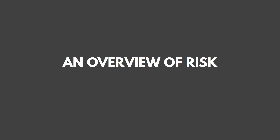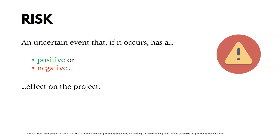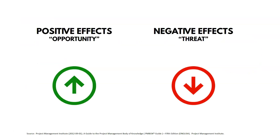A risk is an uncertain event that, if it occurs, has a positive or negative effect on the project. We often think about risk as being only negative, but there are positive risks too — like investing in a stock where it could go down or go up. Positive effects on risks we call opportunities, and negative effects we call threats.